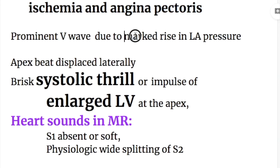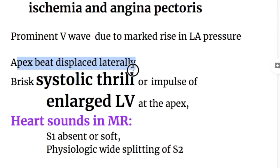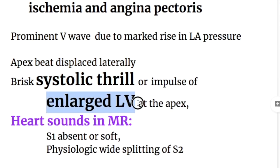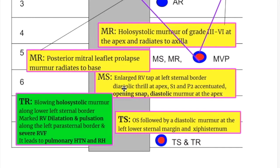On palpation, the apex beat is displaced laterally and there is a brisk systolic thrill or impulse of the enlarged left ventricle at the apex. In mitral regurgitation, there is enlargement of the left ventricle, whereas in mitral stenosis, the right ventricle was enlarged.